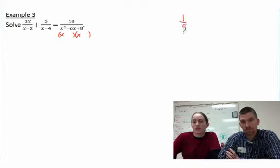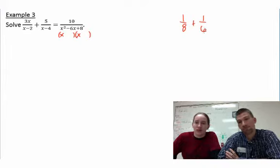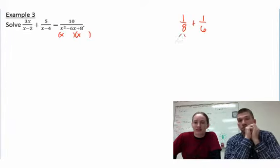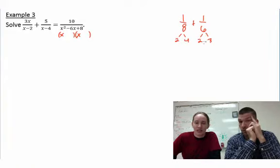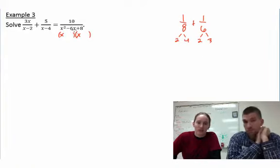It's kind of like whenever you do 1 over 8 plus 1 over 6. You could choose 48 because 8 times 6 is 48. But if you realize that this breaks down into 2 and 4 and this breaks down into 2 and 3 and you realize they have a 2 in common, you realize, oh, 24 works. Right. So that's what we're doing by factoring this over here.